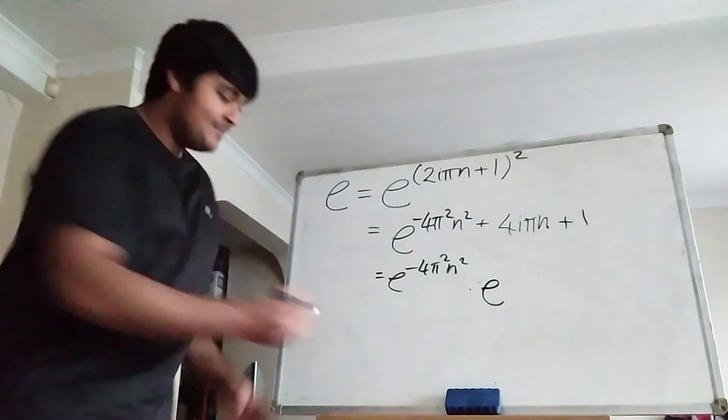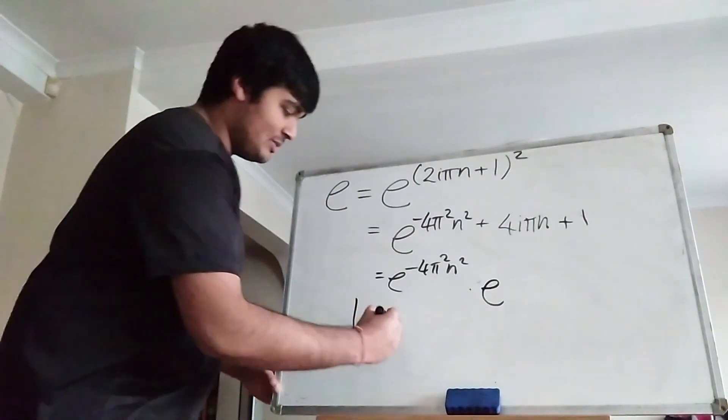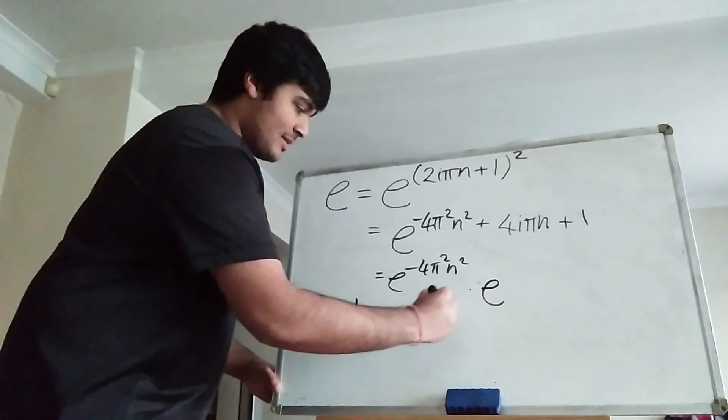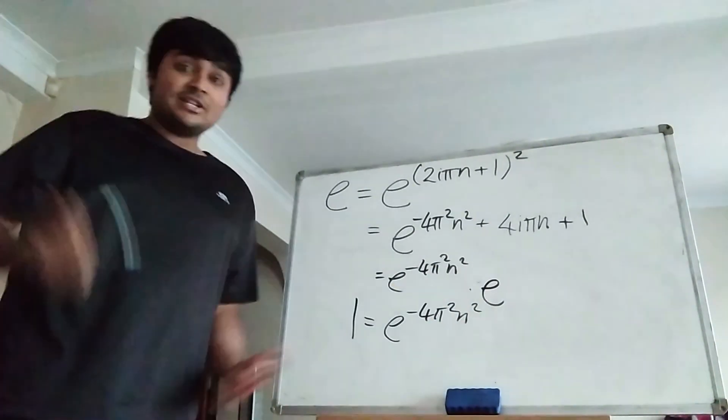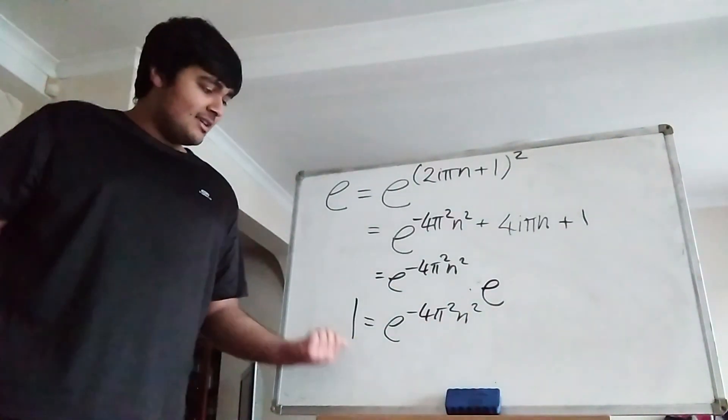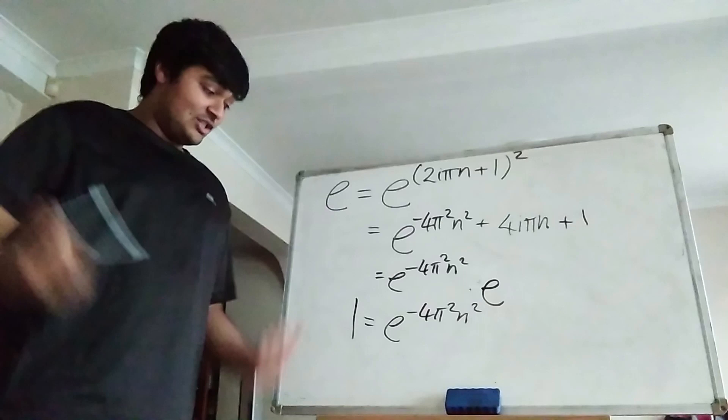So we get e equals e to the minus 4 pi squared n squared times e. But then we can just divide both sides by e, so we get that 1 is equal to e to the minus 4 pi squared n squared. Now we can just take the natural log on both sides. Of course, the natural log of 1 is just 0.